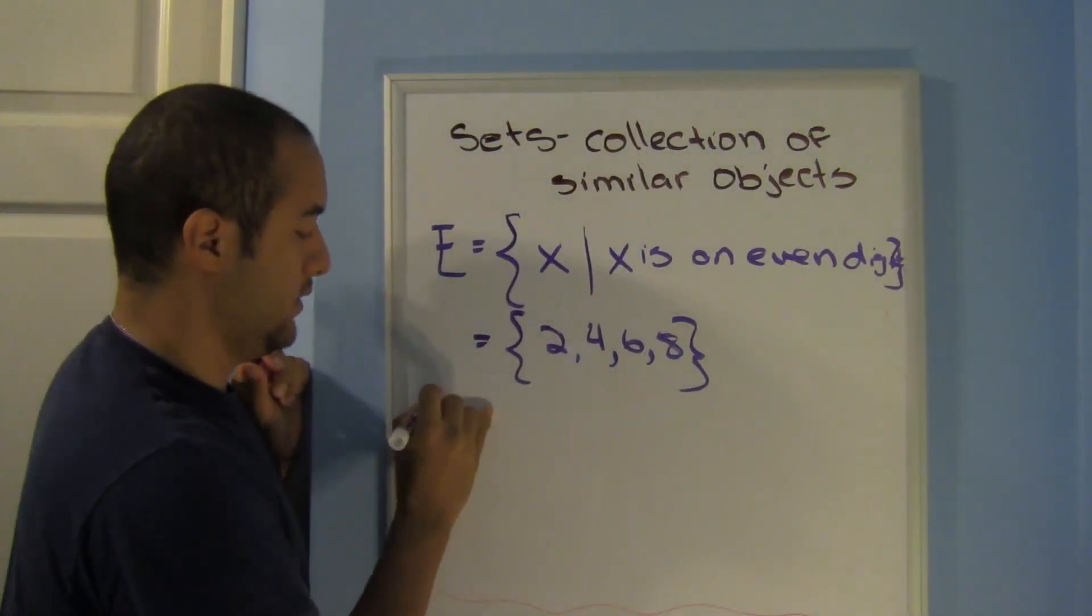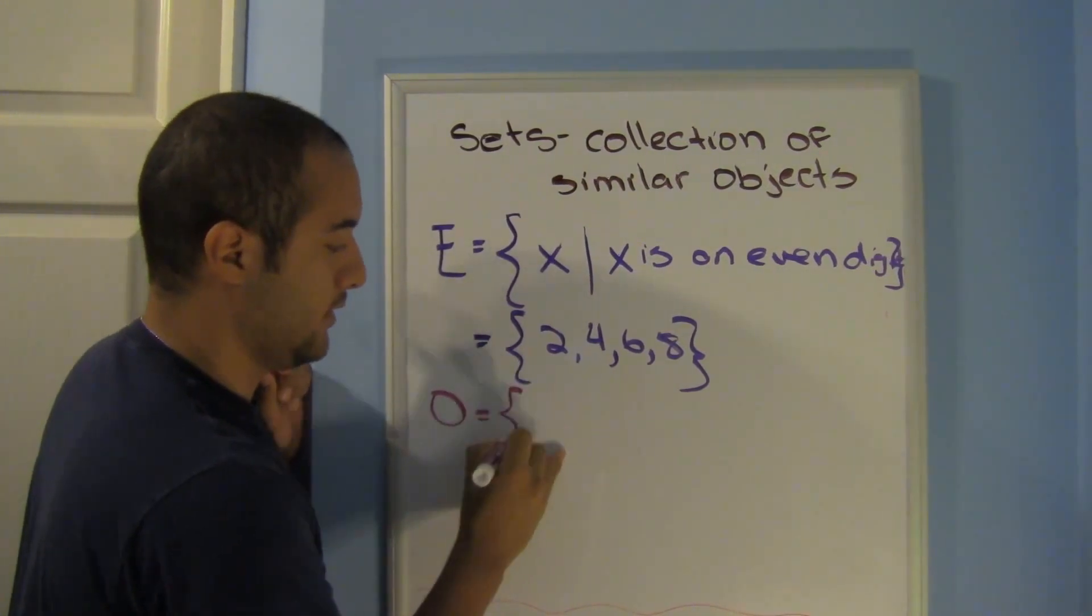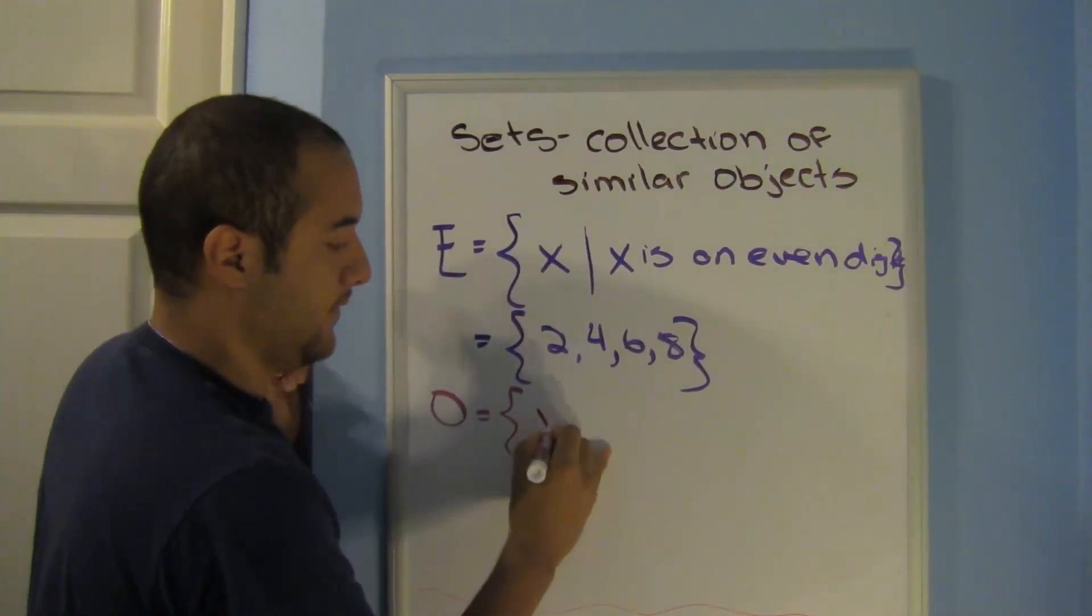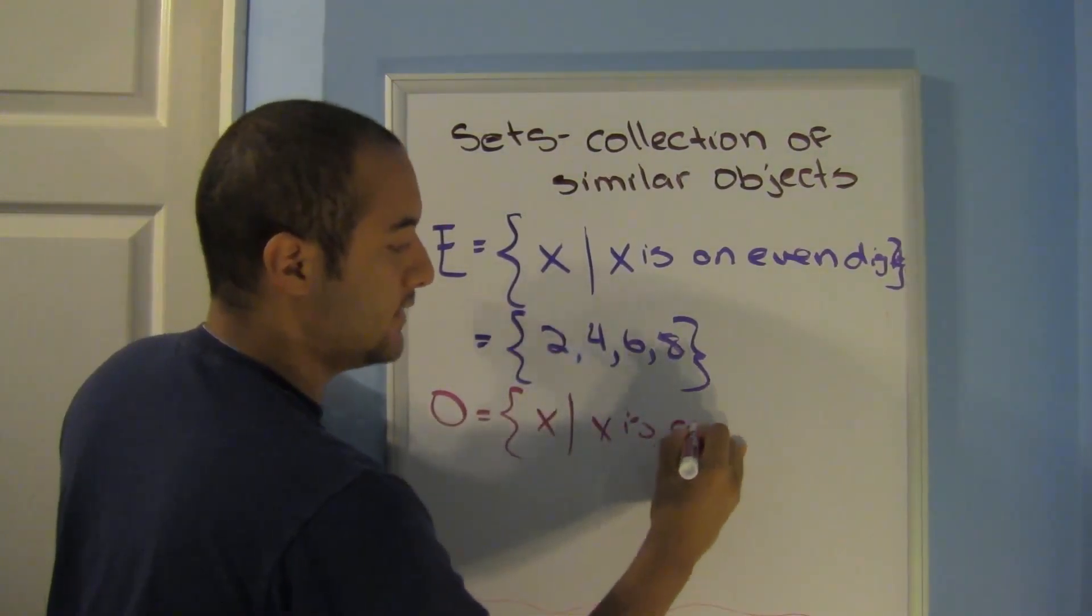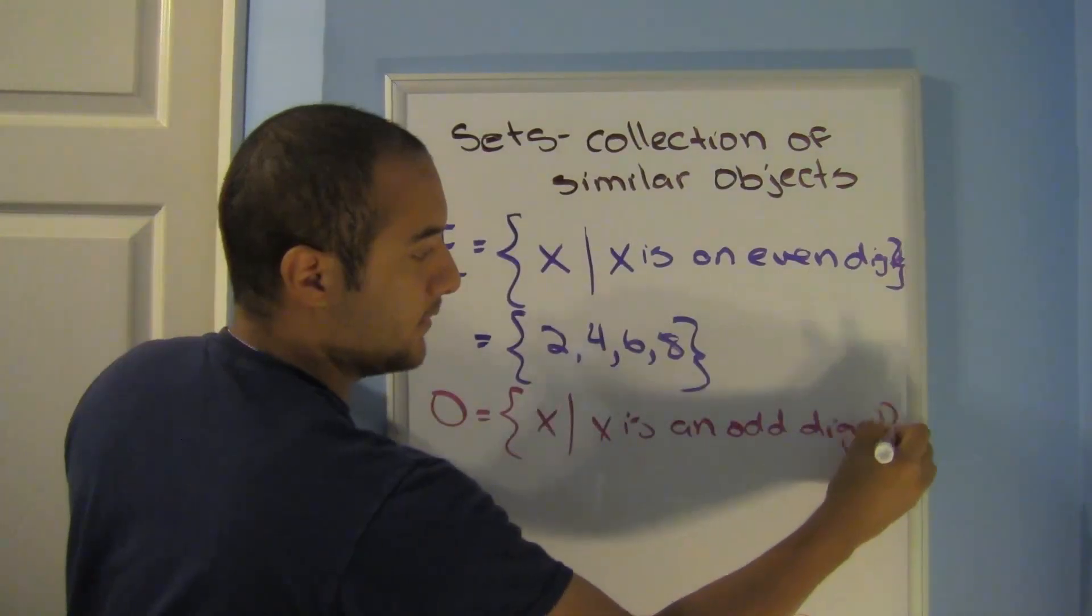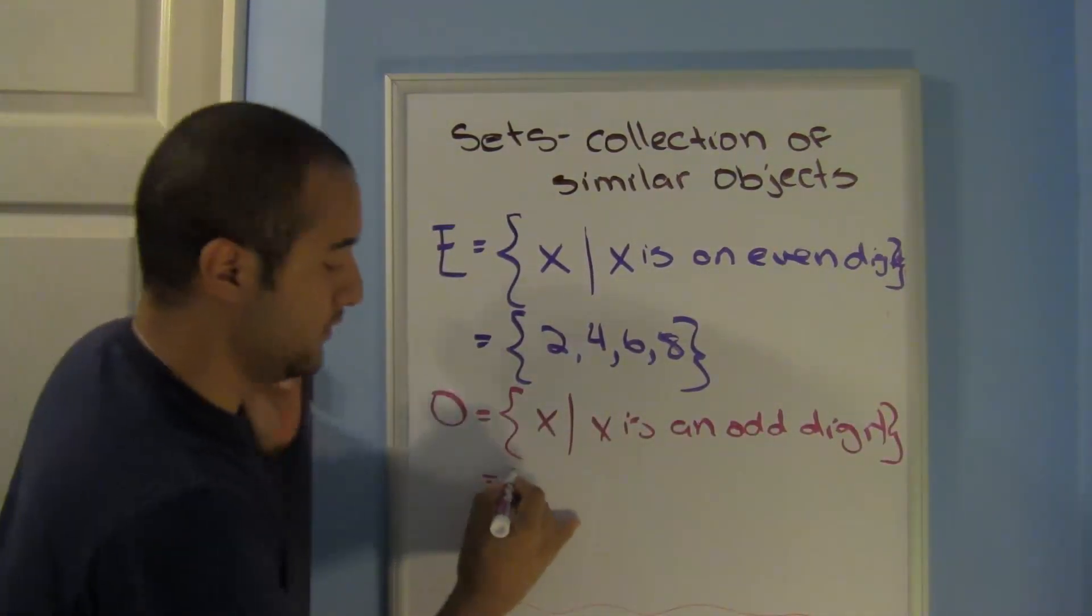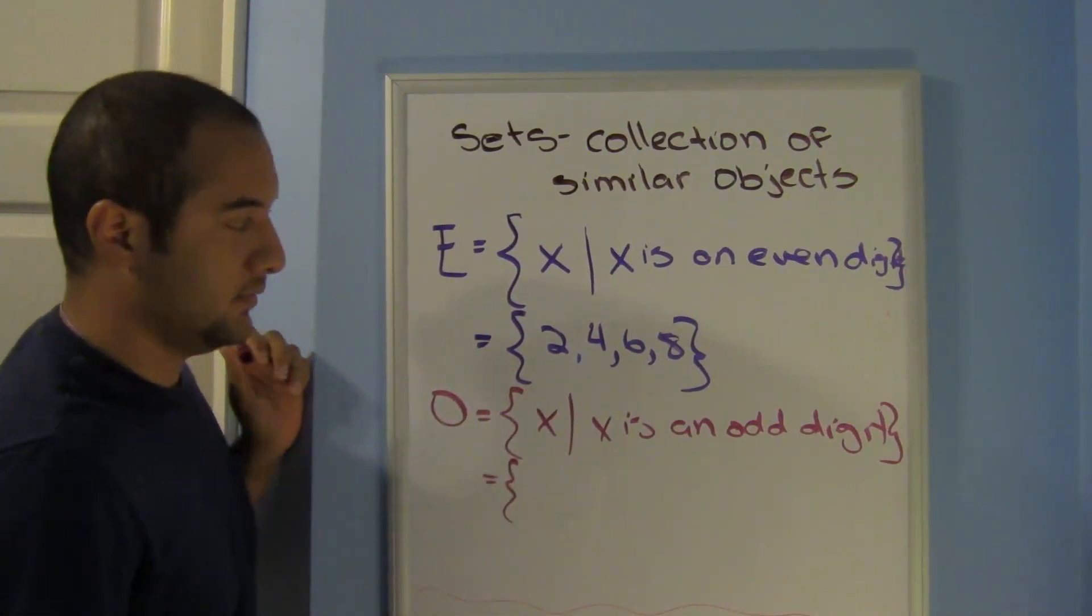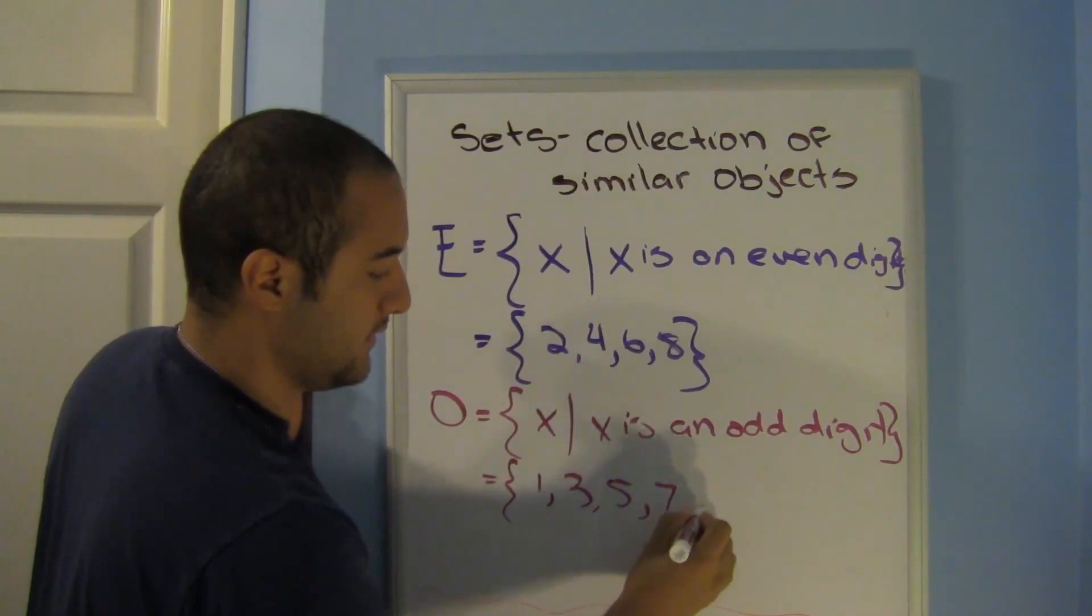Here I can use the set O is the set X such that X is an odd digit. So what am I saying using roster notation? Well, we know that it's 1, 3, 5, 7, 9.